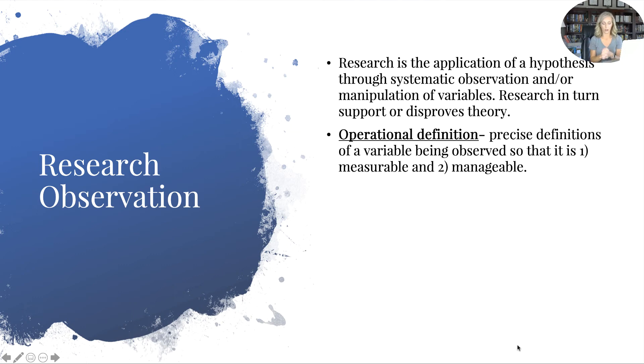If you get nothing from these notes other than this, you have reached success. An operational definition is a precise definition of a variable being observed in research so that it is two things: one, measurable—circle, highlight, star that thing—measurable and manageable. Manageable simply meaning you can actually do it. No one ever said that they're going to in research survey or experiment with three trillion people. No one ever said that because that's not manageable. Really, hundreds of thousands of people is not manageable by most institutions or groups of people.